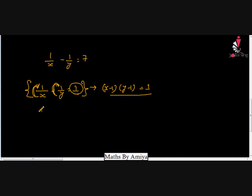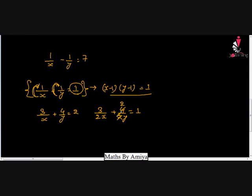For example, if we have 3/x plus 4/y equal to 2, we first convert RHS to 1: divide through by 2 to get 3/(2x) plus 2/y equal to 1. The factor form becomes (2x minus 3)(y minus 2) equal to the product of the constants, which is minus 3 times minus 2 equal to 6. This is the general term.